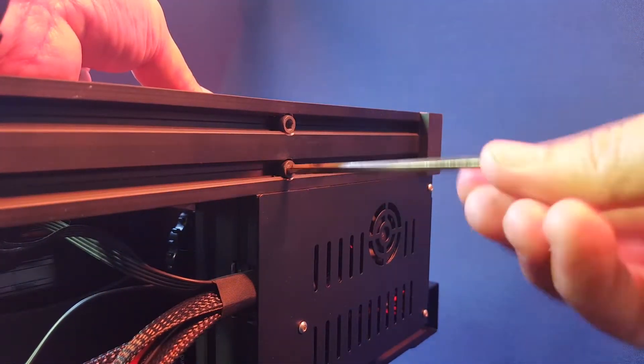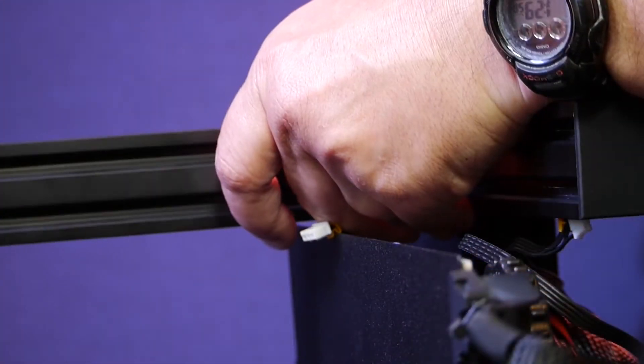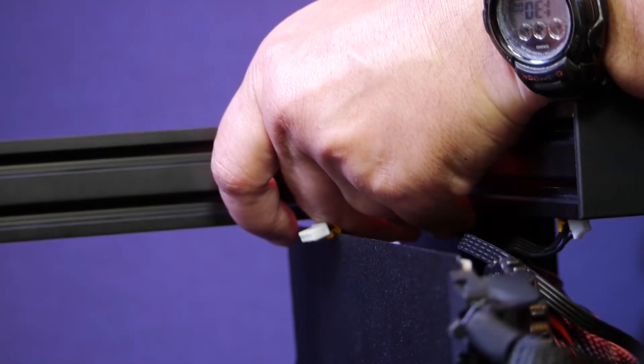At this point you're not supposed to tighten the screws too much. You should still be able to twist or move the aluminum extrusion back and forth.